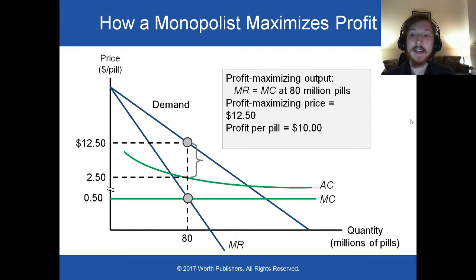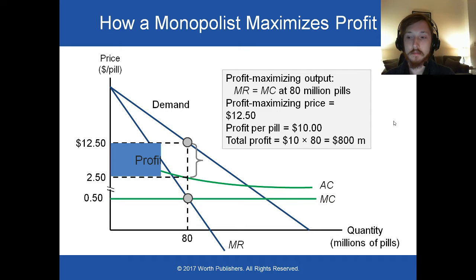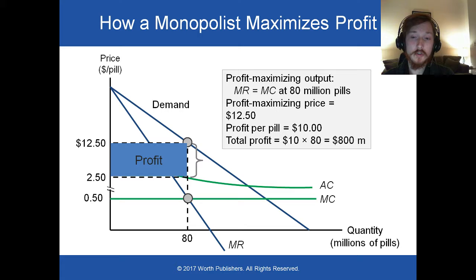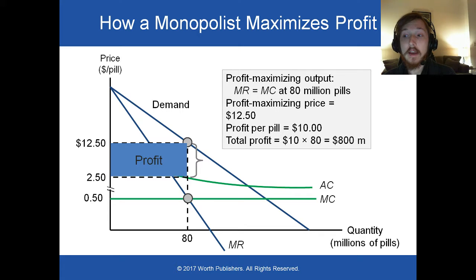Because the price is set at $12.50 and the average cost per pill is $2.50, the monopolist is making a $10 profit per pill. Selling 80 million pills at $10 each, the monopolist is making $800 million dollars in profit.